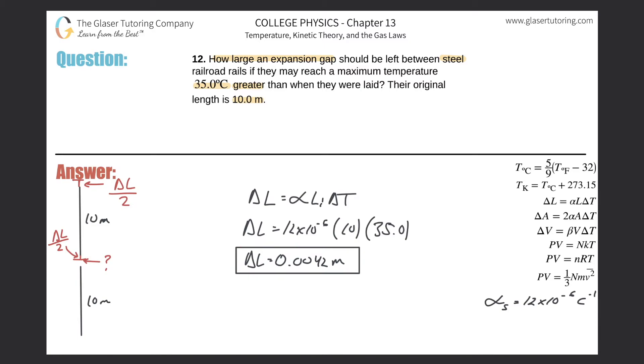So now if I want to find just this little bit of change, I can take that, take this answer and divide it by two. So when we do that, we get now the change in length, I'll write sub one side, meaning on one side of the rail will be now 0.0021 meters.